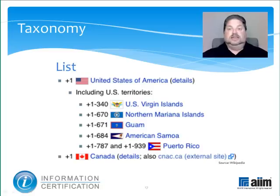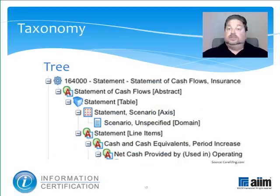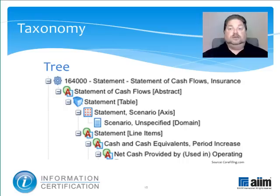A list is the simplest representation of a taxonomy. It's particularly useful when the domain is simple and the amount of content is small. Organizing phone numbers by country code is an example of this. Trees provide an implied relationship between categories and subcategories — the branches of the tree structure — and they're useful when a list gets to be too long and can be broken into natural sections. The listings and categories of a Yellow Pages directory is an example of this.